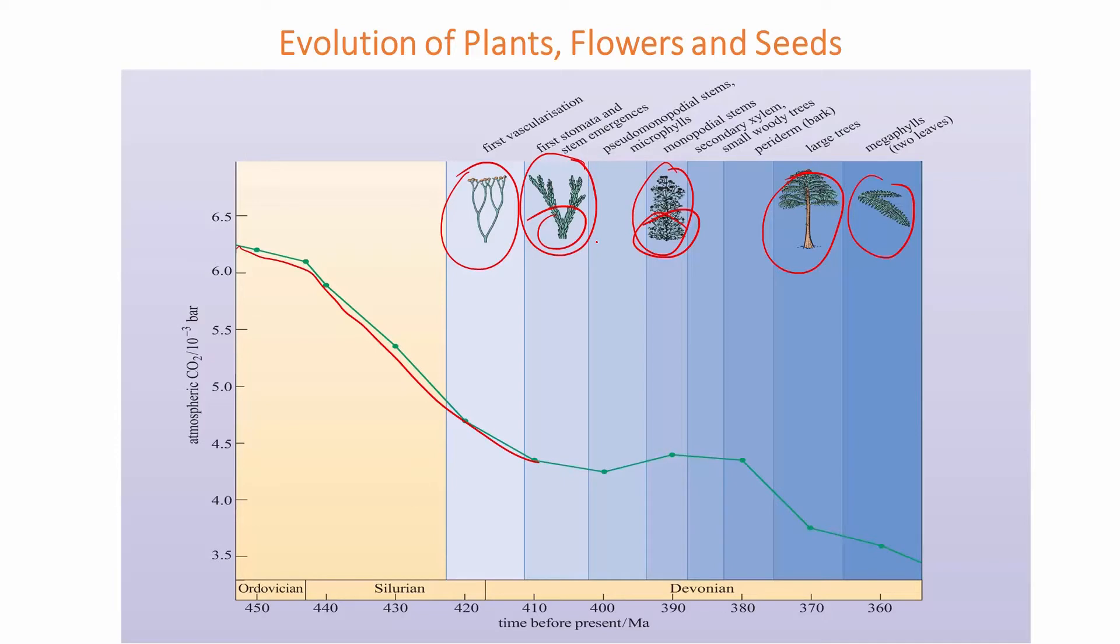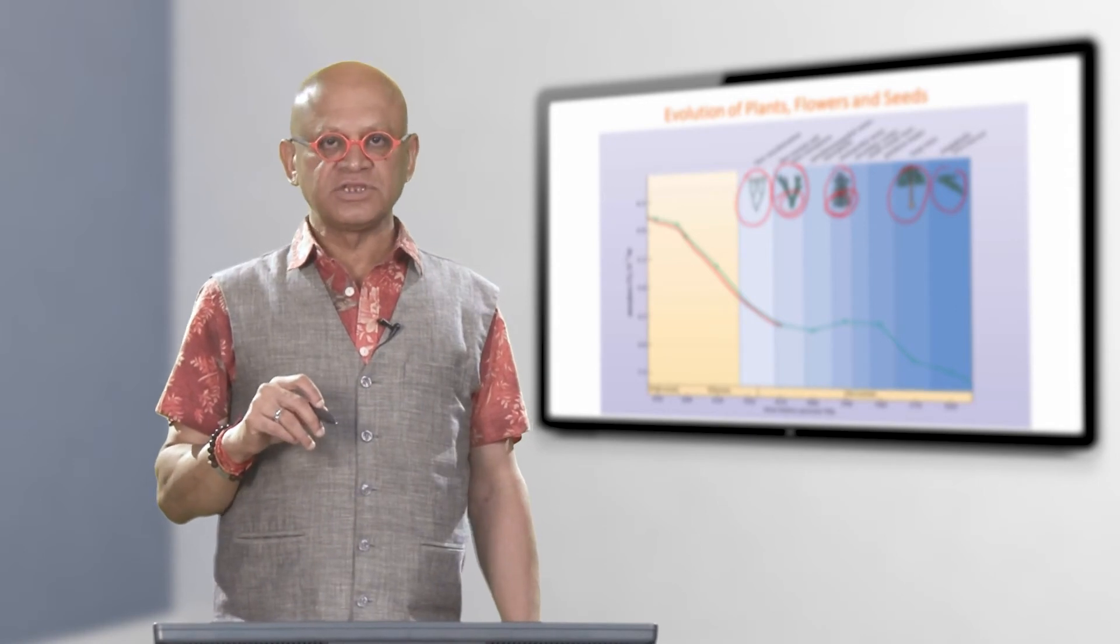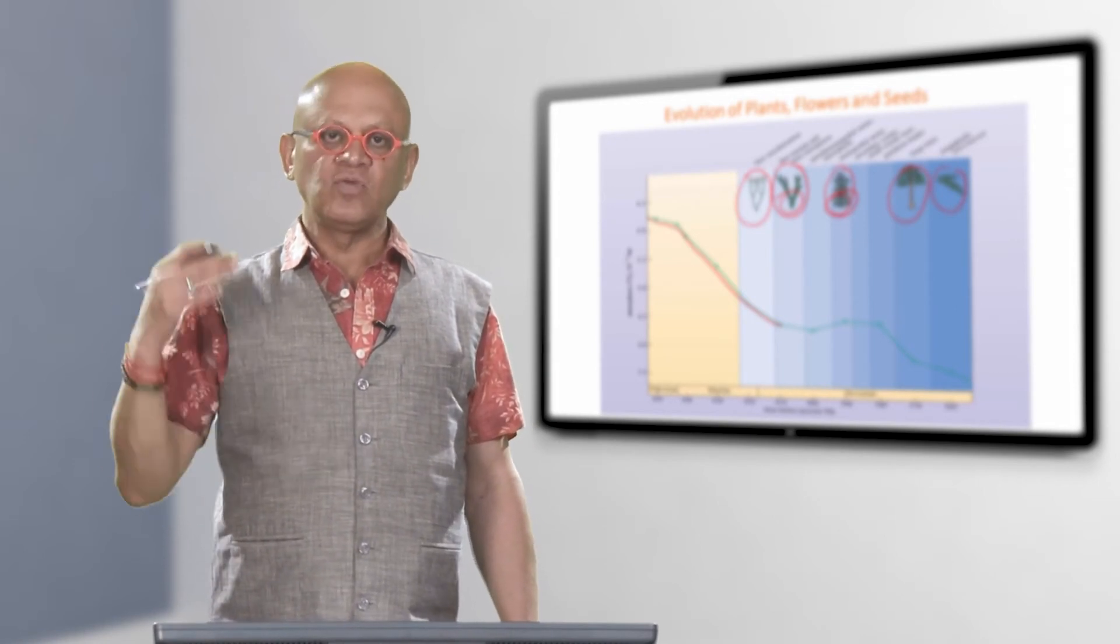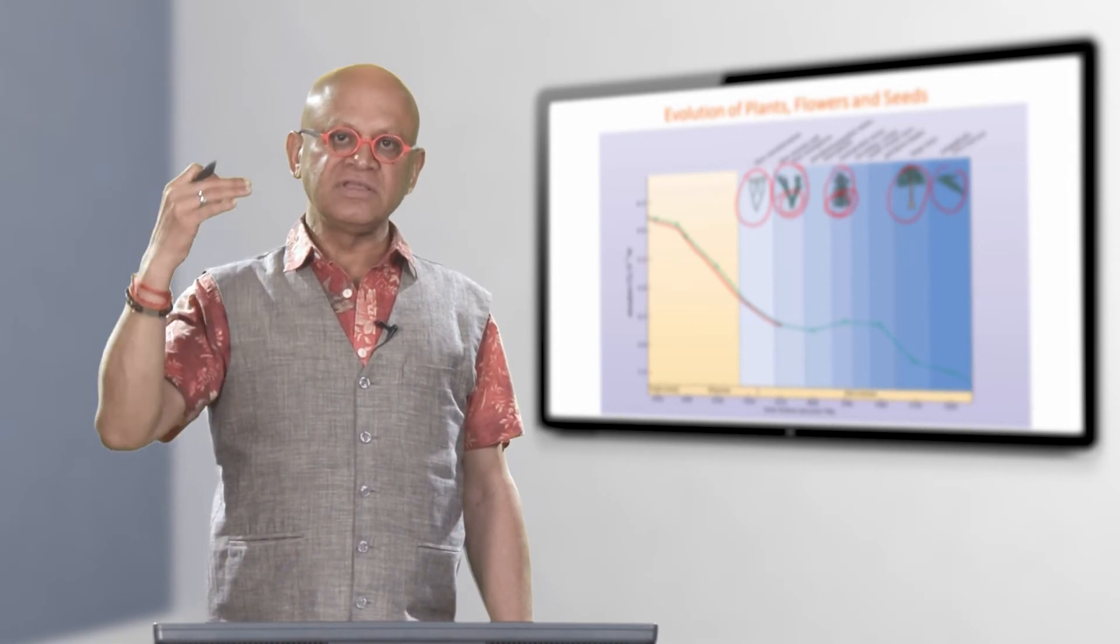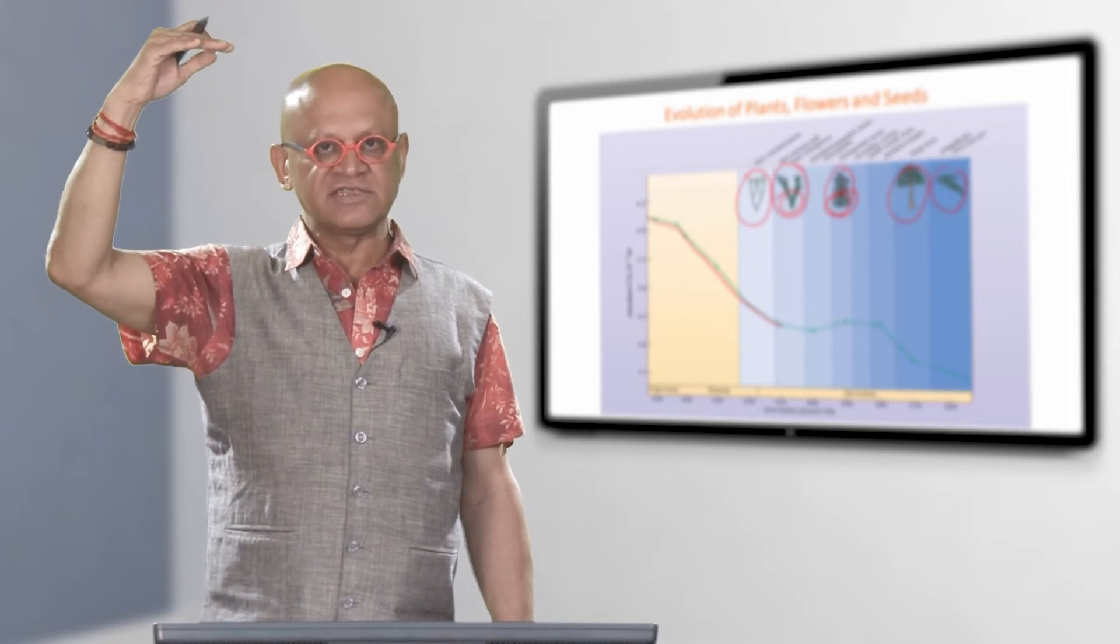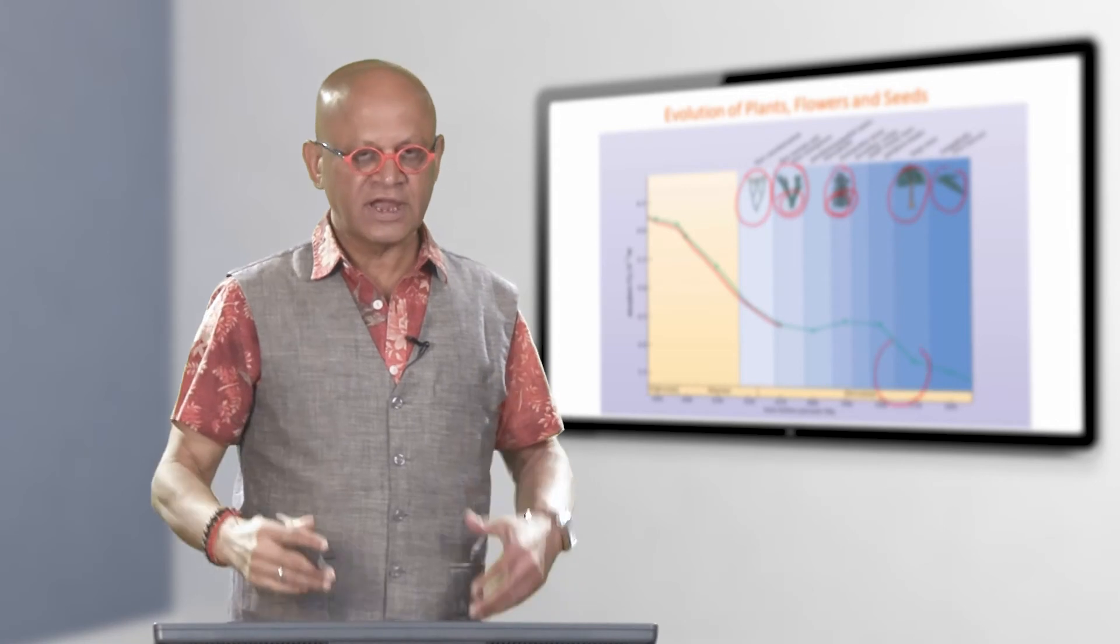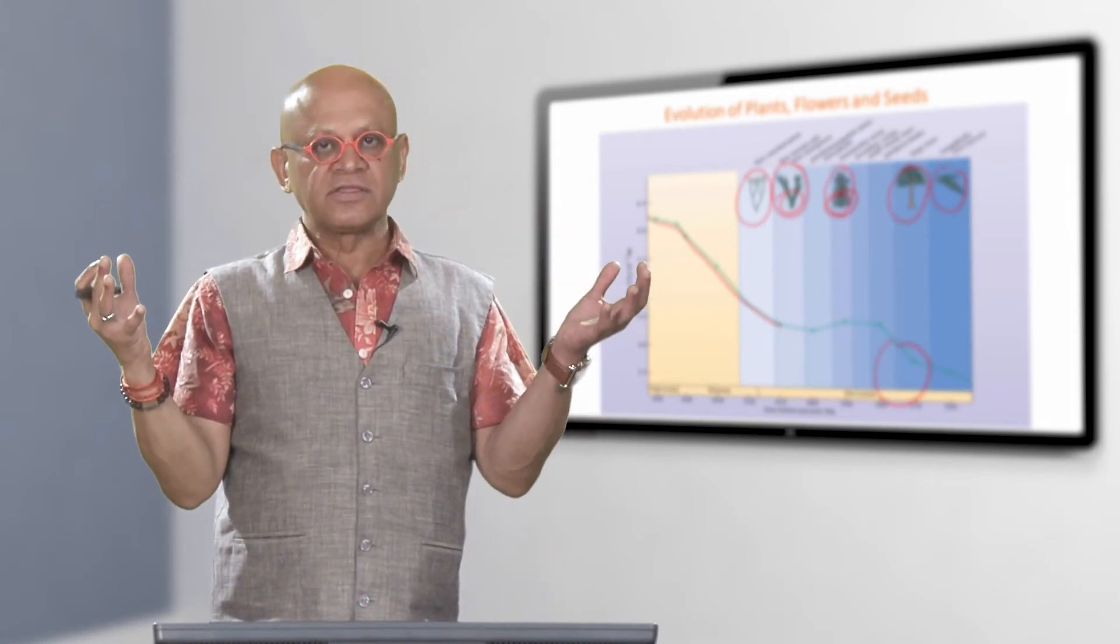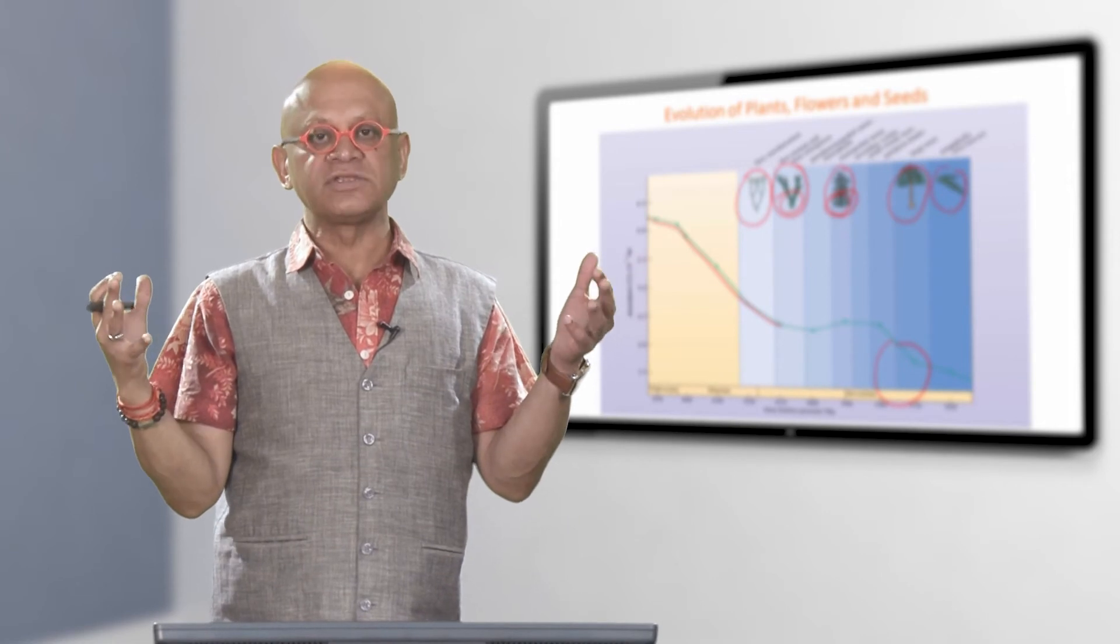So over the same time, the carbon dioxide began to drop. If you reduce the carbon dioxide, and if you remember your greenhouse effect, that means the warming effect of the greenhouse gas is reduced. So in fact, at some point it became so cold that almost the entire Earth got covered in ice and snow in the so-called snowball earth.